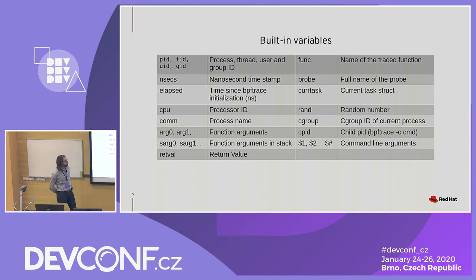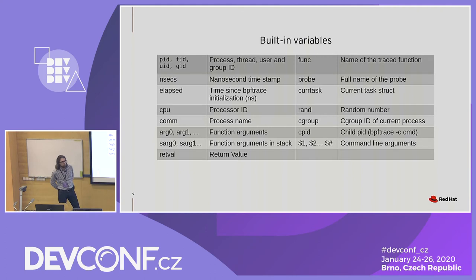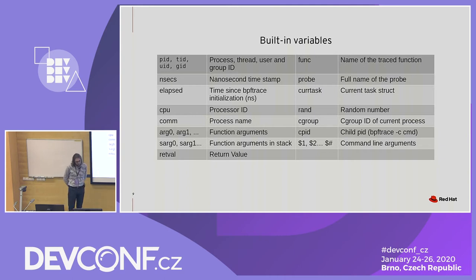There are a few built-in variables in BPF trace. We already saw the process name, comm. There are a few other very commonly used ones with self-explanatory names: PID, TID — we use those all the time — comm as we've already seen, and CPU. We often use CPU as a key for an associative array to sort by CPU, TID, or whatever we need. A few other variables are usually used in a different way but are very useful: the nanosecond timestamp, which we use all the time, arguments, and return values.